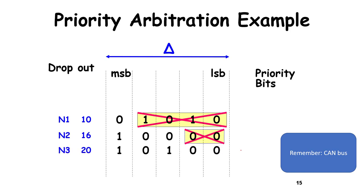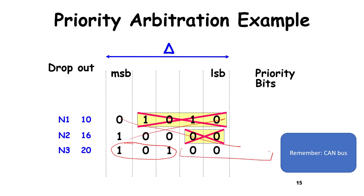An example of priority arbitration is the CAN bus, which is essentially like a countdown protocol where you divide time into slots and send priorities. In this example, higher the number, higher the priority. Message 20 has the highest priority, so other messages get cancelled and the remaining data bits are sent. The countdown protocol as described is essentially what CAN implements.